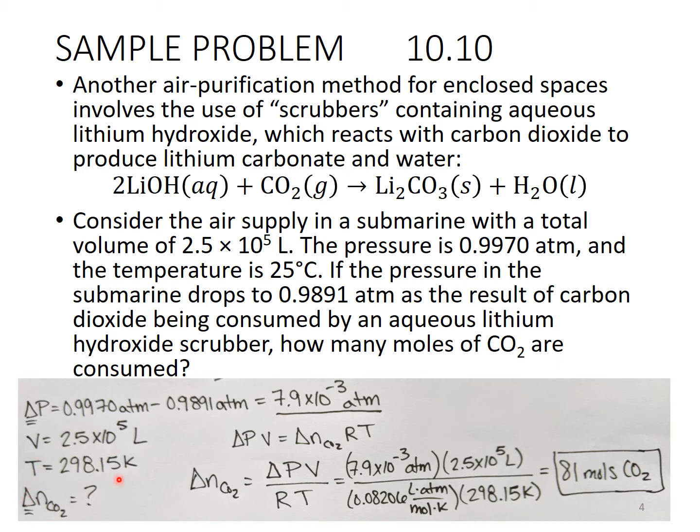So we're going to take a look at the change in pressure. The change in pressure here is 7.9 times 10 to the negative 3 atmospheres. That will get us the change in moles of CO₂, which is what the question is asking for. We have a volume, we have a temperature, again, temperature convert to Kelvin, don't keep it in degrees Celsius. And then you just plug that in. So the number of moles of CO₂, the change in moles of CO₂ is the change in pressure volume over RT.